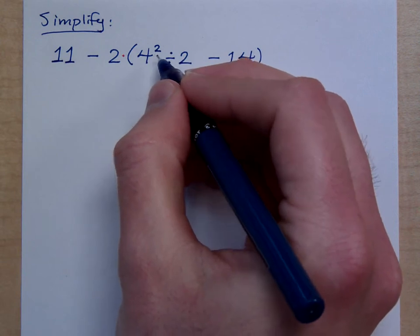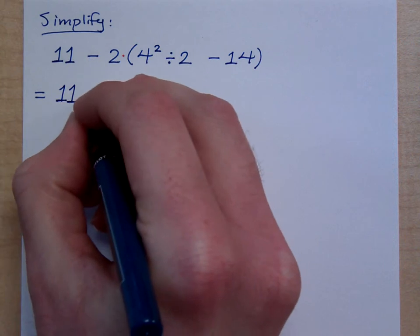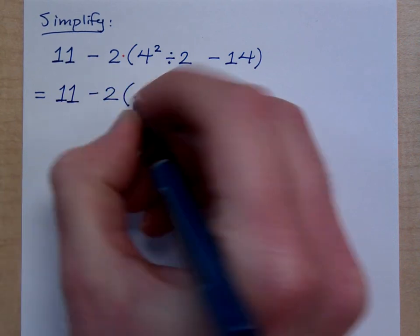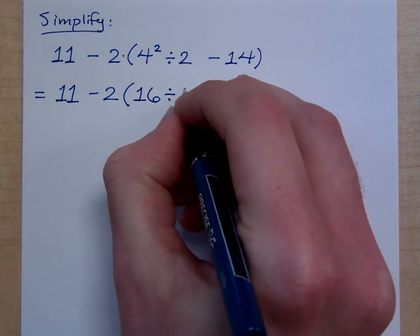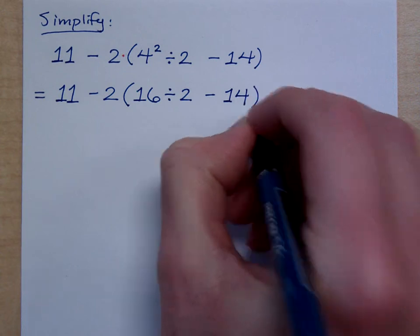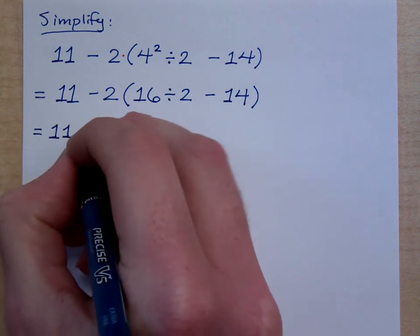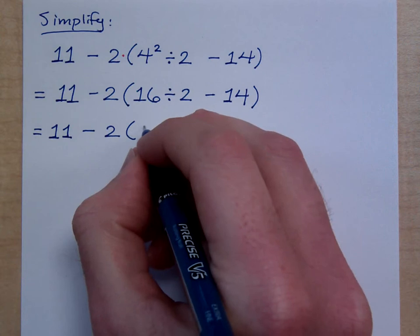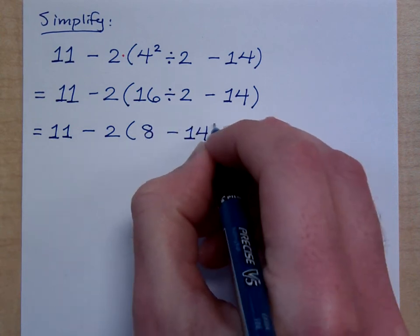Inside the parentheses, I see exponents first. So I'm just going to rewrite everything. 4 squared is 16, and then bring down the divided by 2 minus 14. Inside the parentheses, what do I do next? Next, I do division. I've got 16 divided by 2, so I've got 8 minus 14.